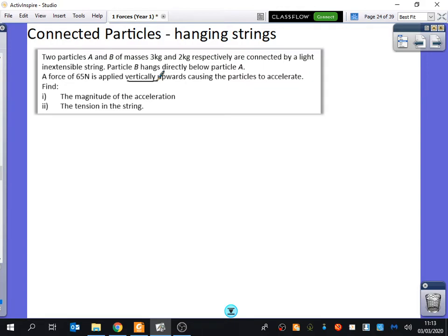So if I draw what this looks like, I've got two particles. Which one's on top? A is on top. It says particle B hangs directly below particle A. So here is particle A, here is particle B, and they are connected by a string like this.